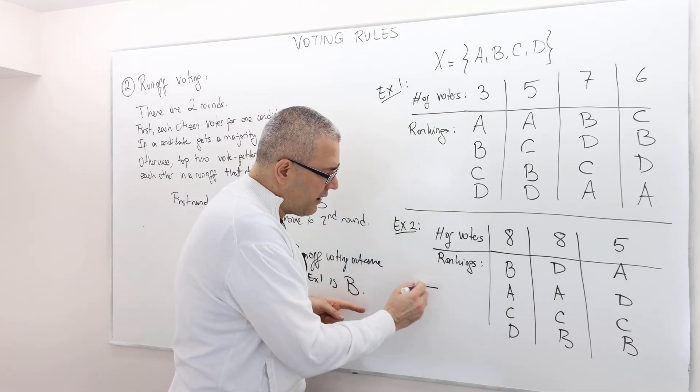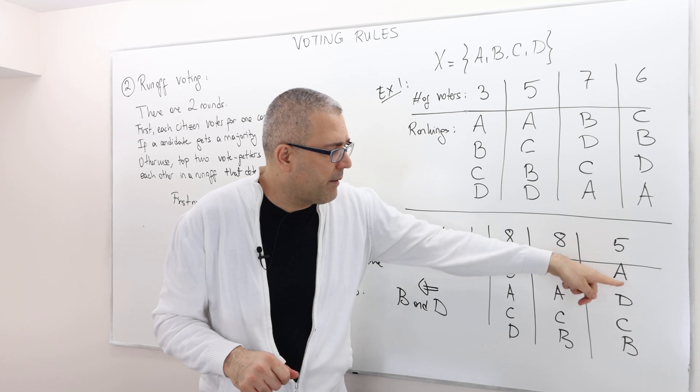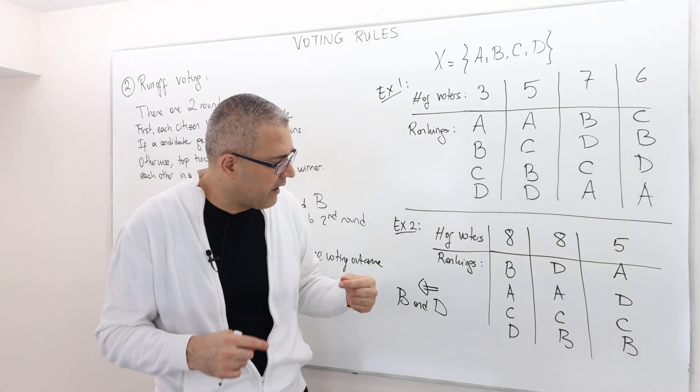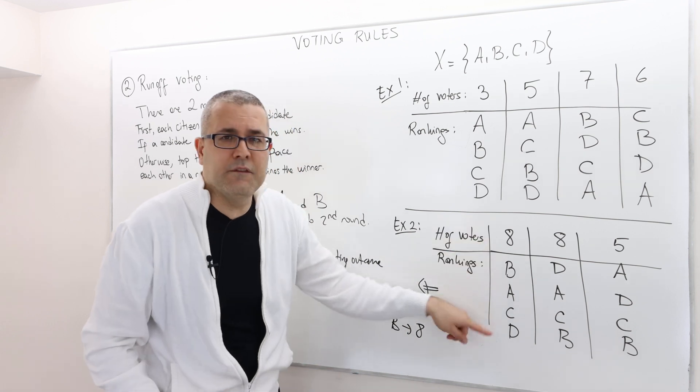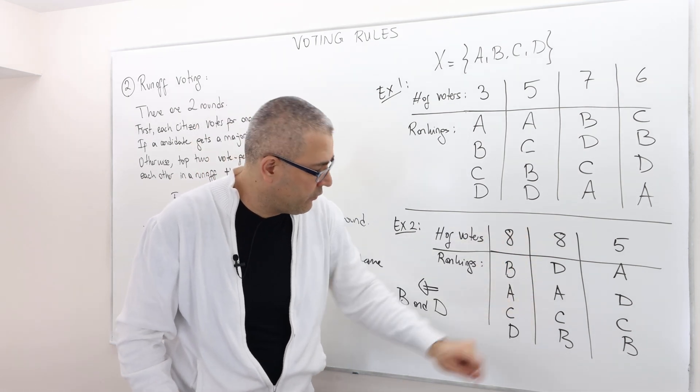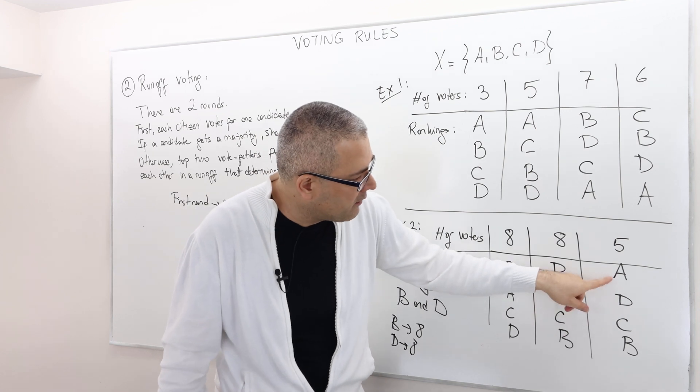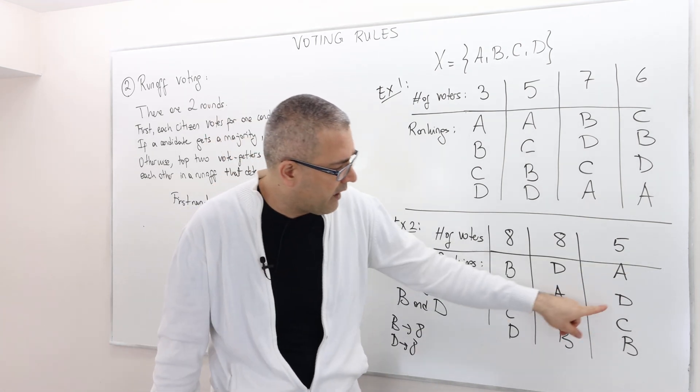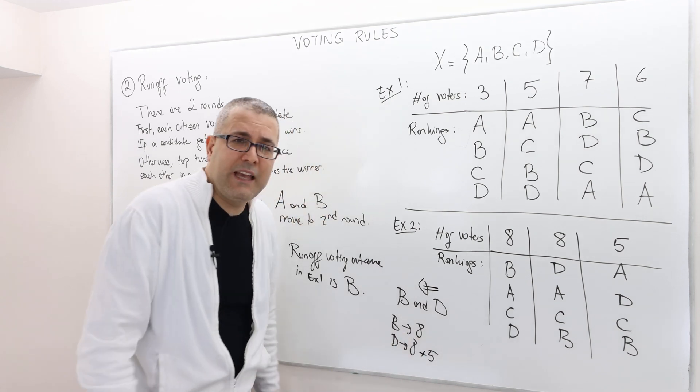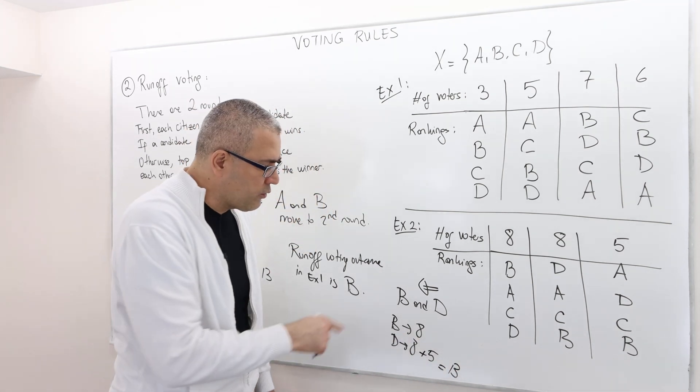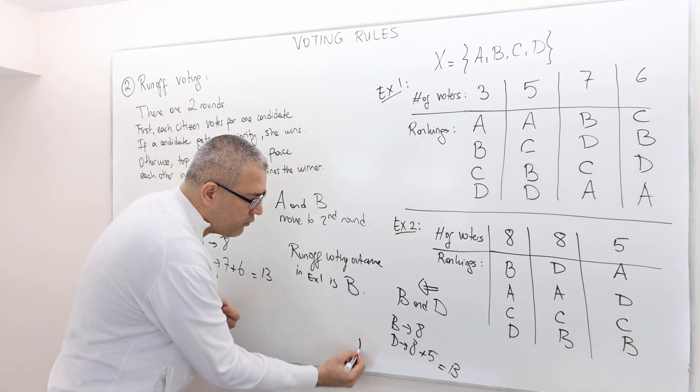In example two, the top two candidates are going to be B and D because both of them have eight votes. A has only five votes. So now in the second round, those eight people prefer B to D, so B gets those eight voters. Those eight people prefer D to B, so D is going to get those eight voters. What about those five people? If we ignore A and C, they're not in the second round. Actually, they prefer D over B, so they would vote for D. So D would actually get five more votes. That means 13 votes goes for D. So therefore, the runoff voting outcome in the second example is going to be D.